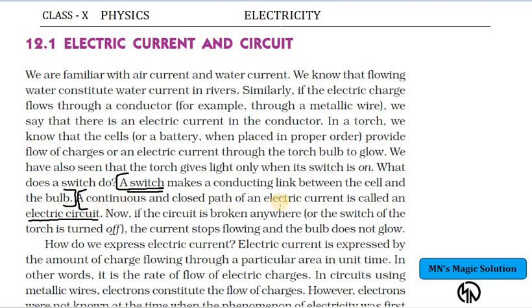Flow of charges, that is the electrons from the negative terminal of a battery towards the positive terminal, which is actually contributing the electricity. Let us check out what is given in your NCERT textbook. First of all they have given about a switch. Switch makes a conducting link between the cell and the bulb.